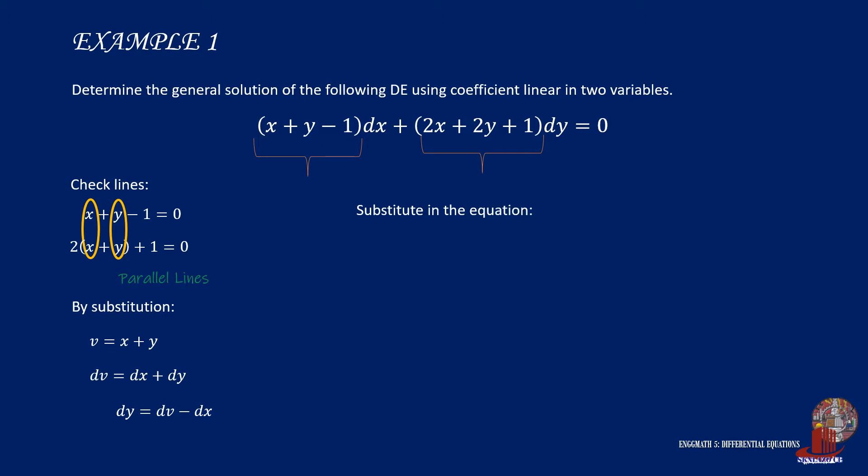Plug these parameters into the original equation and remove groupings by distributing terms. It would make the equation longer, so the next step is to collect similar derivatives and we get the quantity of 2v plus 1 times dv plus the quantity of negative v minus 2 times dx is equal to 0.